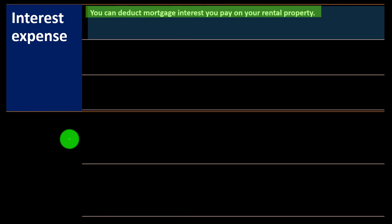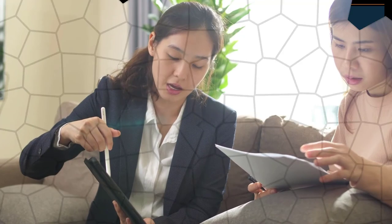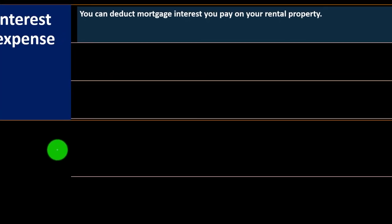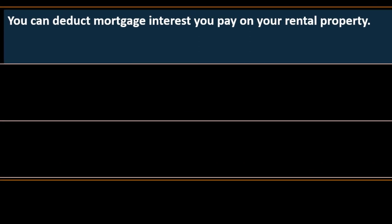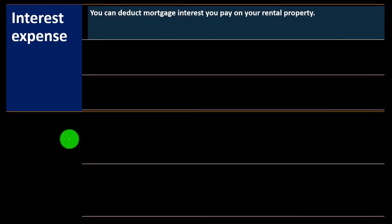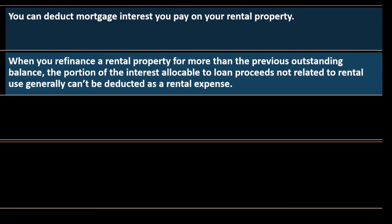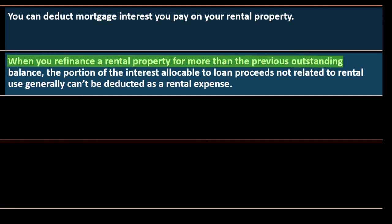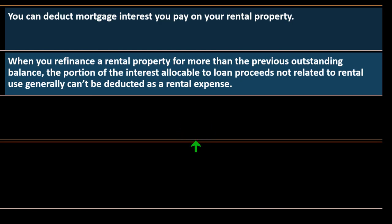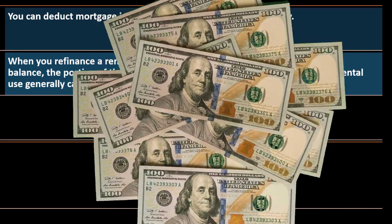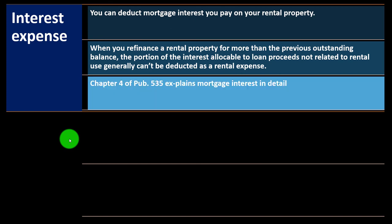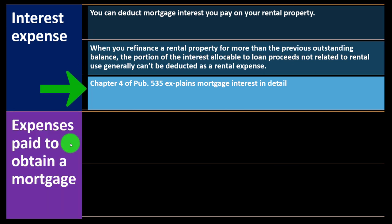Interest expense: you can deduct mortgage interest you pay on your rental property, reported on Schedule E — not Schedule A itemized deductions. If you have a home you rent part of, you may need to allocate the mortgage interest between Schedule E and Schedule A. When you refinance a rental property for more than the previous outstanding balance, the portion of interest allocable to loan proceeds not related to rental use generally can't be deducted as rental expenses. See Chapter 4 of Publication 535 for more detail.